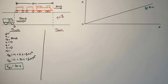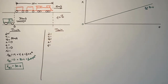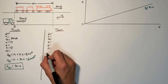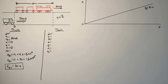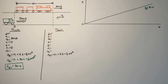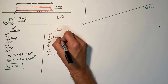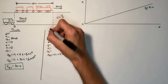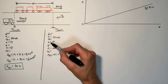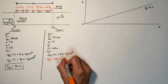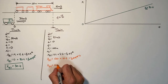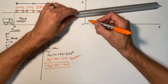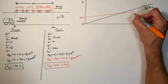Moving on to the train, we again set up our five kinematic variables, focusing on position rather than displacement. Just like the truck, the train is not accelerating, so it always travels at 10 meters per second with an acceleration of zero. Because the train is 100 meters long, the front edge of the train starts at an initial position of 100 meters. Plugging these values into our position function gives us a position versus time of 100 plus 10t.